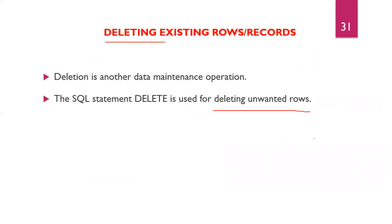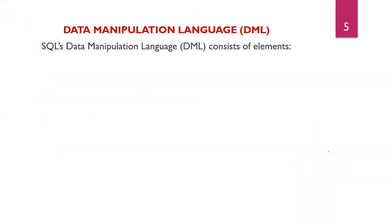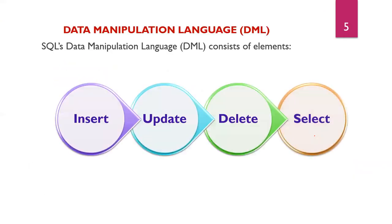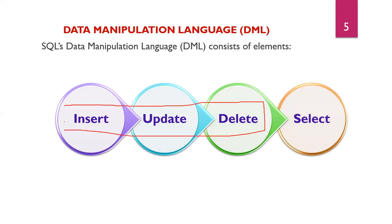Hope you understand students. We have covered four types of DML statements: INSERT, UPDATE, DELETE, and SELECT. We discussed the syntax for INSERT — including implicit and explicit null methods. We looked at UPDATE with conditions and DELETE with the WHERE clause. For SELECT, we covered basic retrieval, SELECT * for all columns, and the DISTINCT keyword to avoid duplicates. We will explore more SELECT features in future classes.